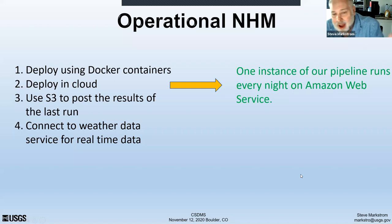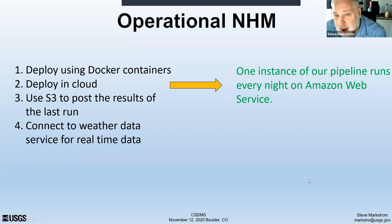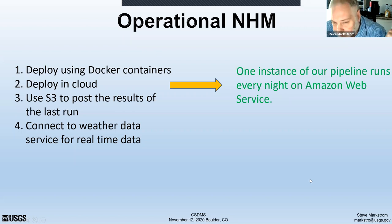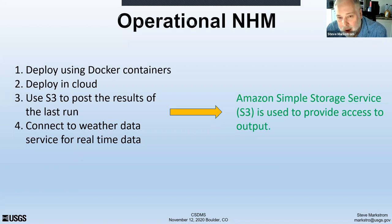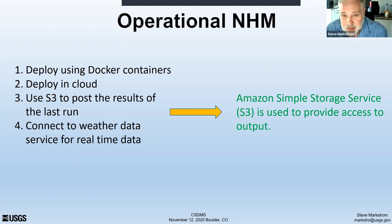Another thing that makes this operational is we've deployed this chain or pipeline of Docker containers on the Amazon cloud. It runs every night on the Amazon cloud — that's a big part of what makes this operational. We're using the S3 Simple Storage Service: when the model runs in the cloud, it dumps a significant set of files to S3, so we as humans can pick up the output.